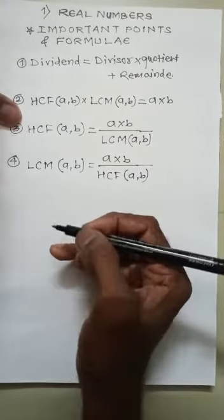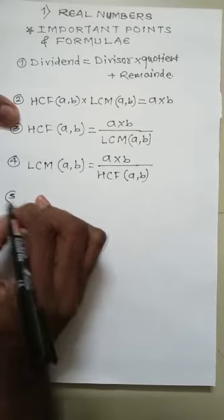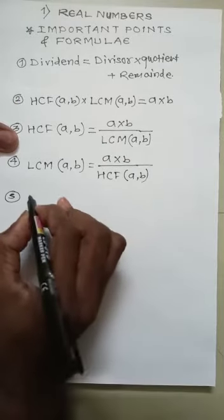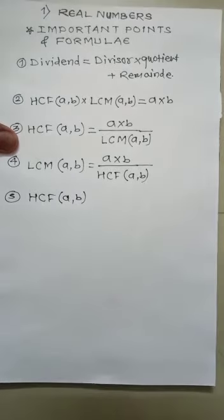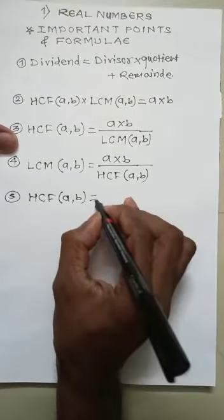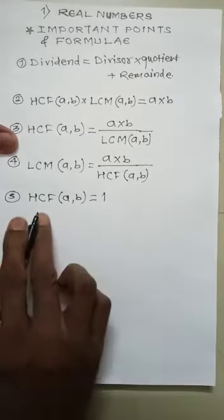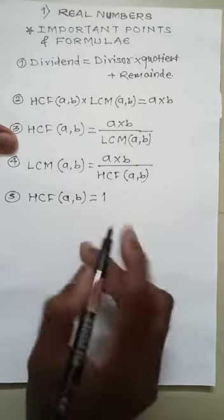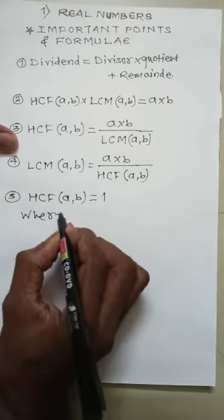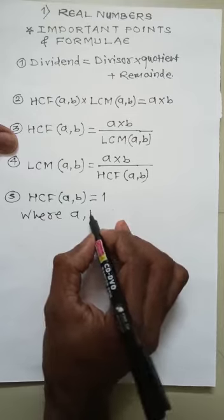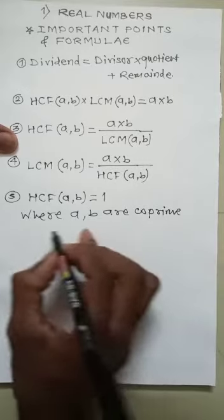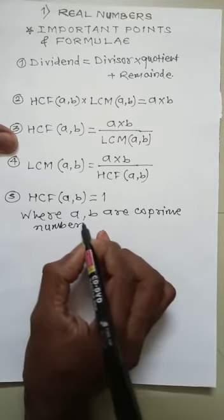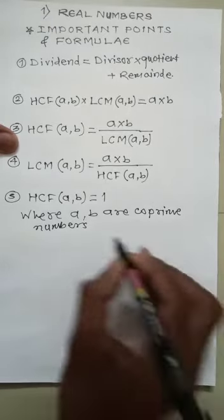This is our next formula. Now another important characteristic: HCF of A and B equals 1 when A and B are co-prime positive integers or numbers.